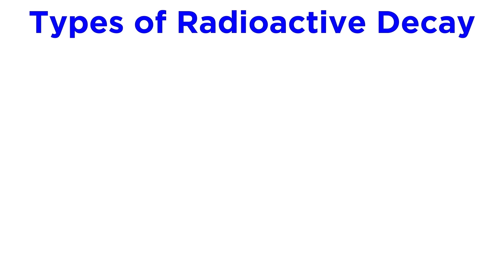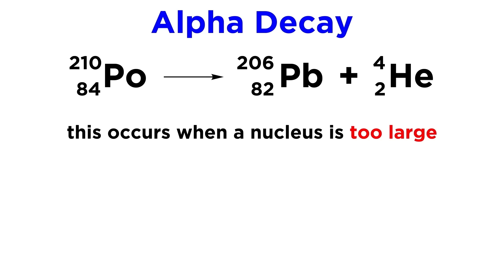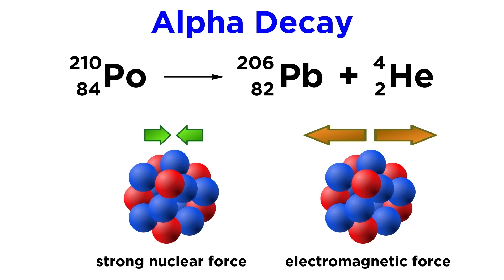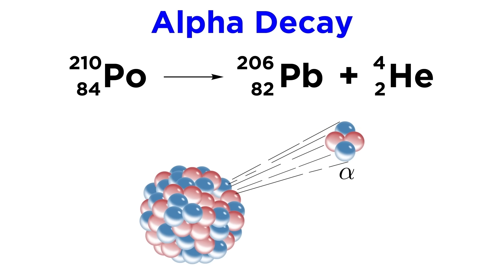So we've already begun to see some of the types of radioactive decay. Alpha decay, as we saw, will occur when a nucleus like this one, polonium-210, is simply too large. The strong nuclear force drops off much more quickly with distance than the electromagnetic force, so eventually the repulsion of the protons becomes too much for the strong nuclear force to hold it together, and an alpha particle will be ejected, resulting in a lighter nucleus.